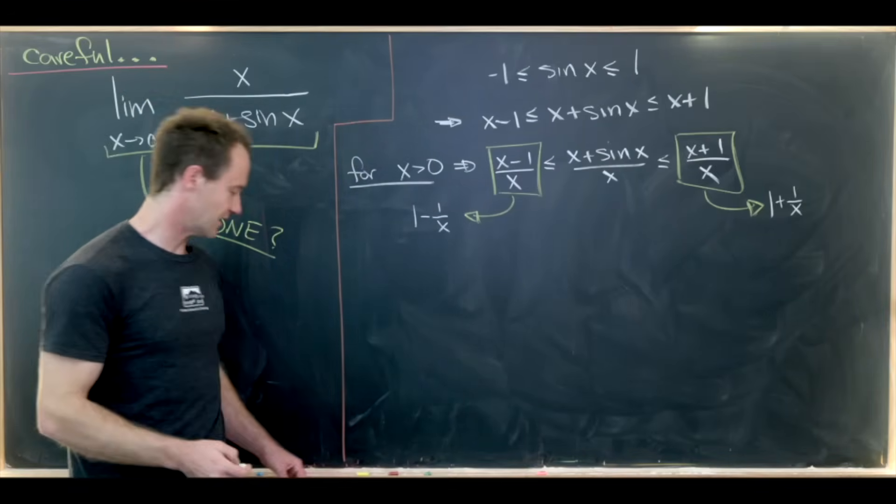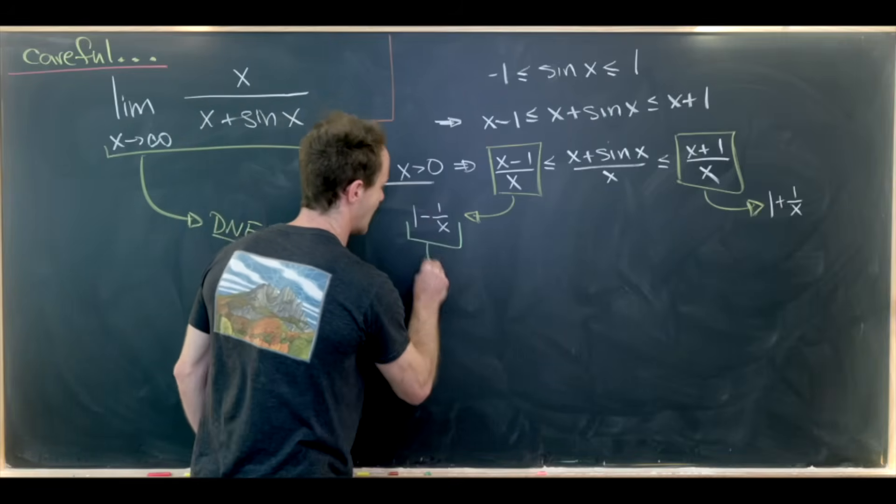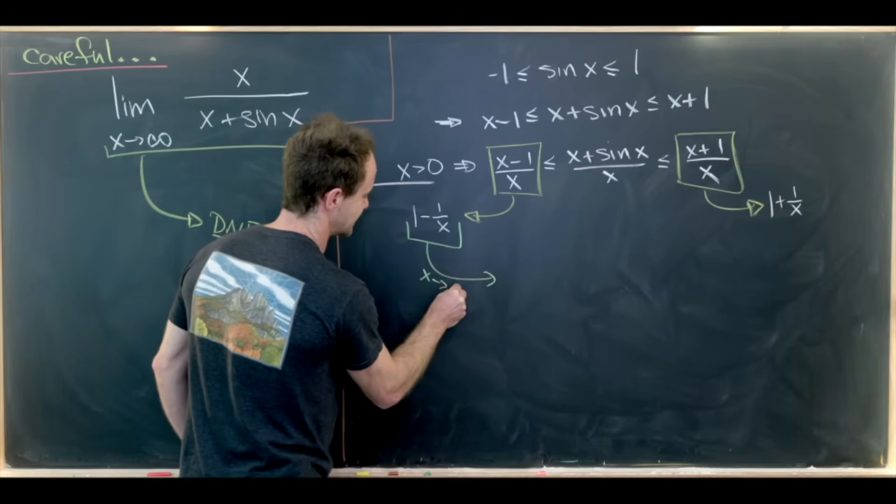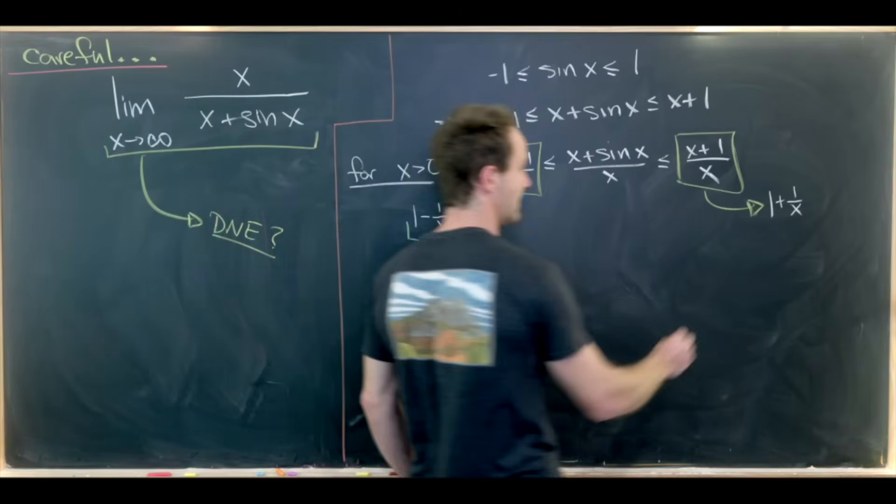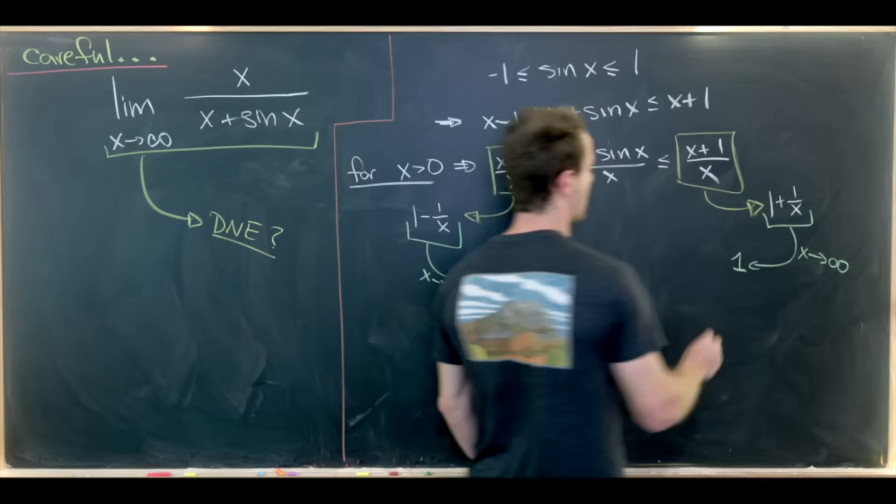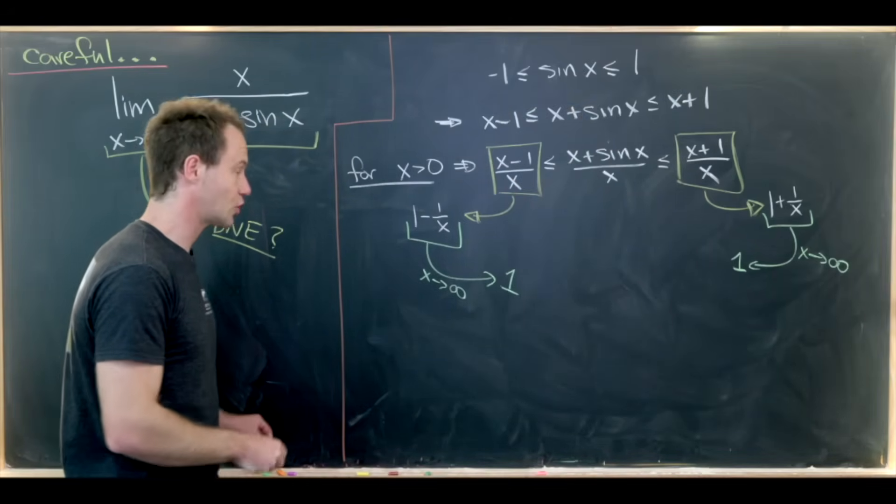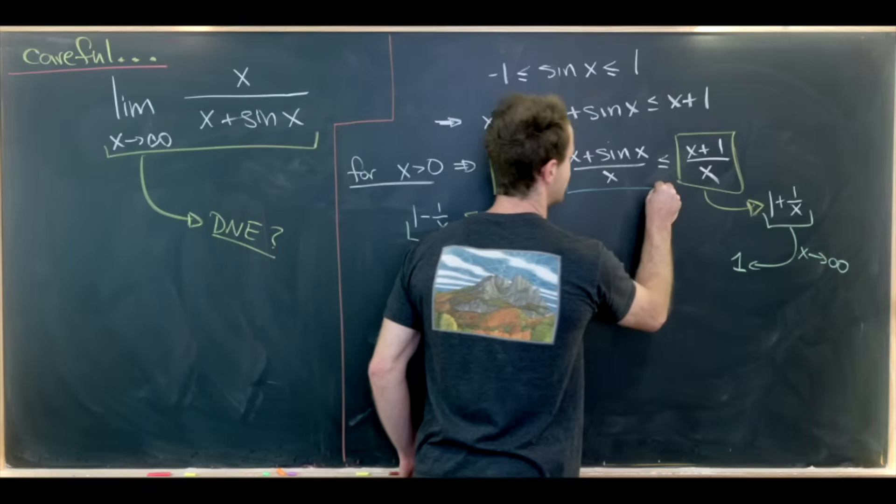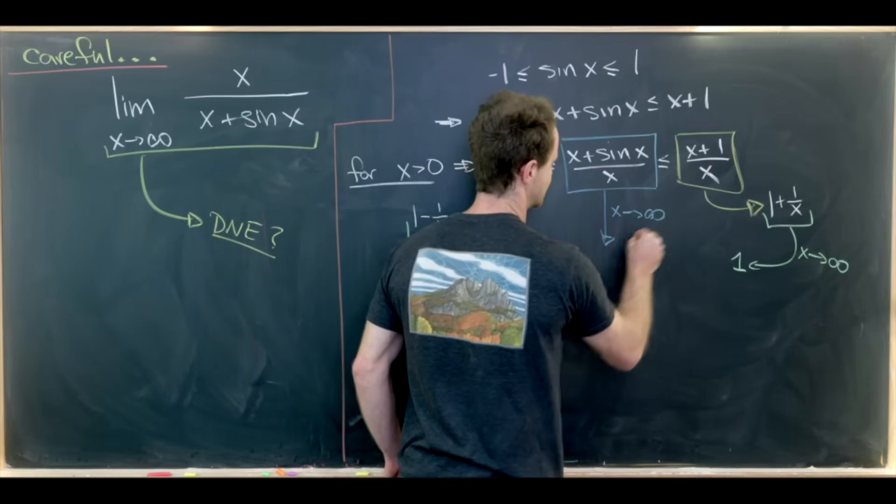But now we can take the limit of all portions that we see. So as x approaches infinity here, this thing approaches 1, and then as x approaches infinity over here, this thing also approaches 1. So then by the squeeze theorem we know that this inner part of our inequality also approaches 1.